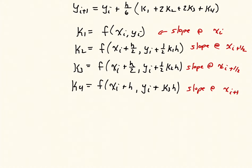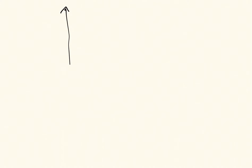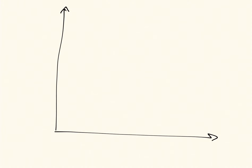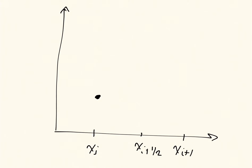Graphically, we can see how this works. If I make a sketch — let's say we're going from x-i to x-i plus 1, and in the middle we have x-i plus one-half. We're going to start at some location; this is our solution at x-i, y-i. From here, we're going to compute a slope — the green slope, which is k1 — and use that slope to get out to x-i plus one-half.